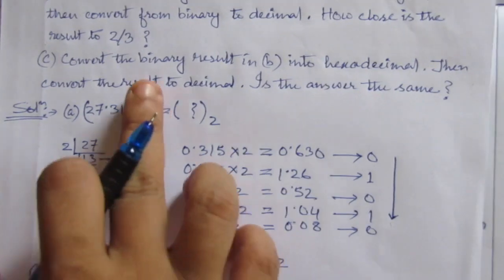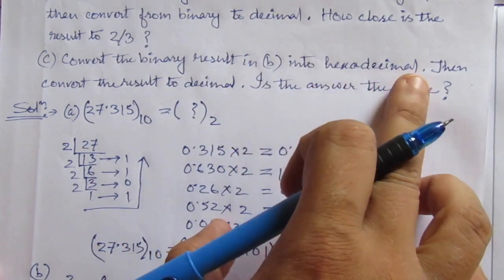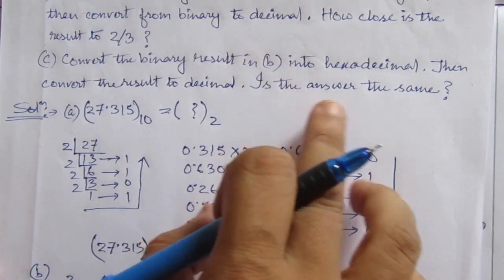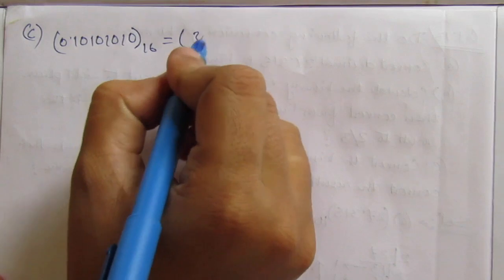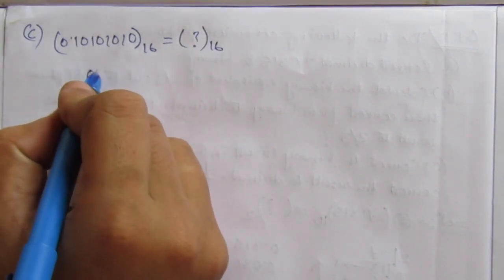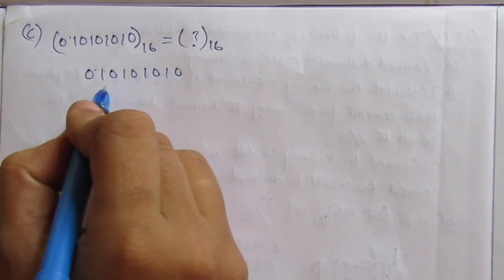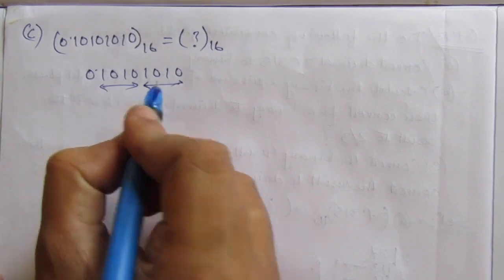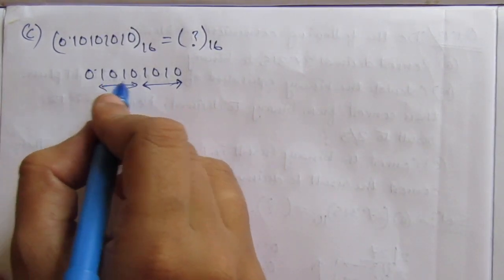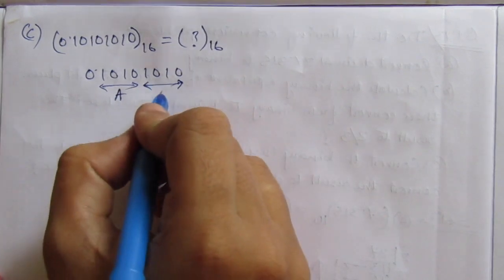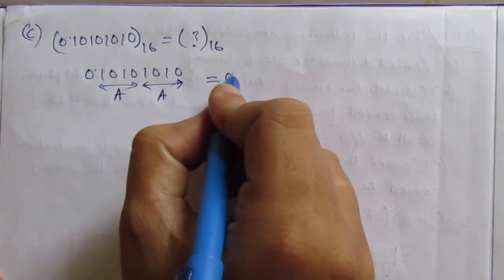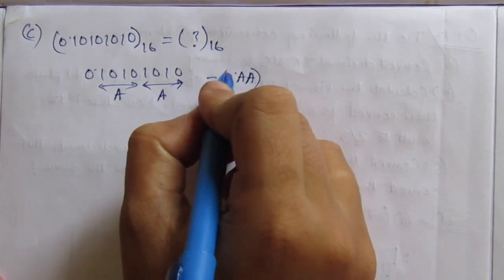For the third part, we convert the binary result from part (b) into hexadecimal. The binary pattern 0.10101010 — grouping each set of four bits — 1010 equals 10 in decimal, which is A in hexadecimal. So 0.10101010 in binary is written as 0.AA in hexadecimal.